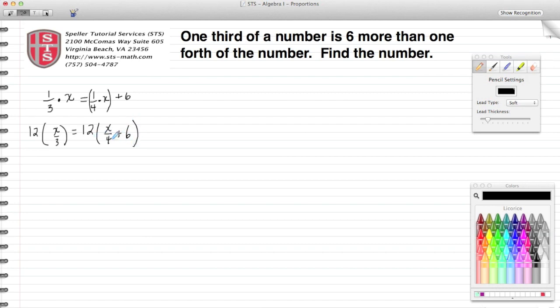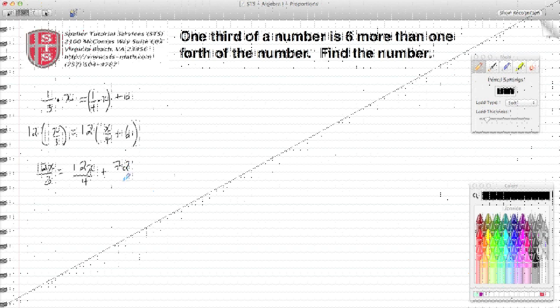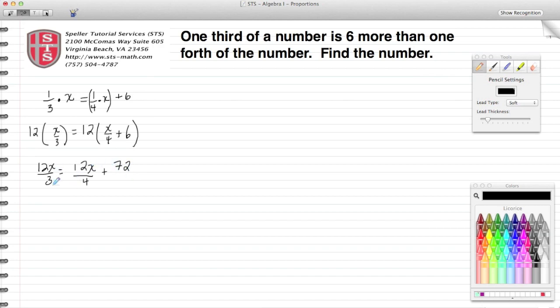Remember, this 12 has to be distributed to all the terms in your equation. That's why the X, the X fourths, plus 6 is in parentheses. Now let's multiply or distribute the 12. 12 times X thirds is 12X over 3, set that equal to 12 times X over 4 plus 12 times 6, which is 72. Now I need to simplify my fractions. 12 divided by 3 leaves me with 4X, and then 12X divided by 4 leaves me with 3X, and I rewrite my 72.